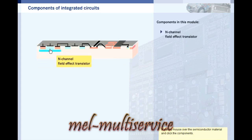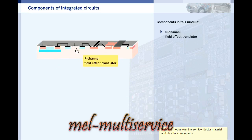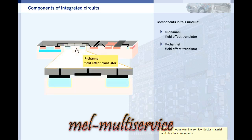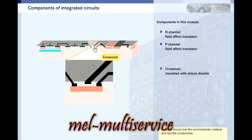You are already familiar with this N-channel field effect transistor. The P-channel field effect transistor has the opposite structure and is referred to as complementary. With crossovers, one connection is sunk into the semiconductor material and acts as a P-type semiconductor underneath the connection crossing above it. The insulation consists of silicon dioxide.